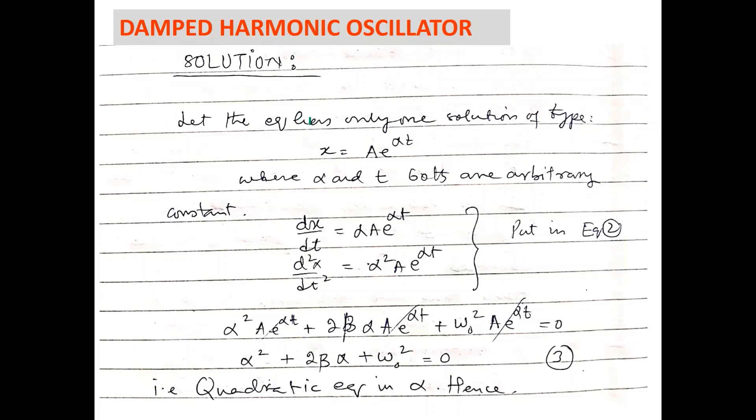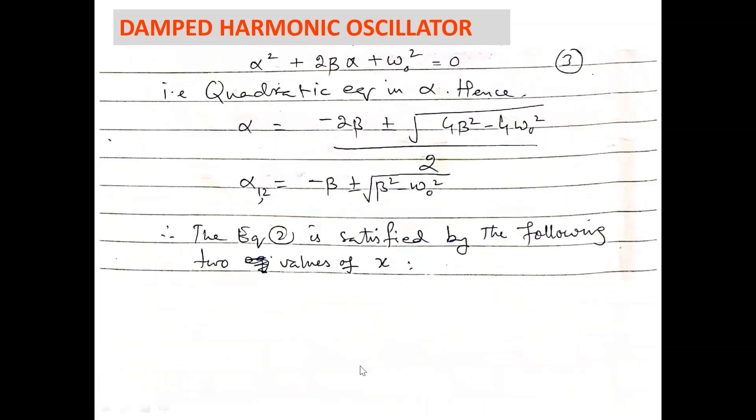Suppose the solution of the equation is x equals a e power alpha t, where alpha and a both are arbitrary constants. By taking the first order and second order derivative of this equation, we get these two equations. By putting these equations in equation 2, we get alpha square plus 2 beta alpha plus omega naught square equals 0. This is a quadratic equation in alpha. By solving this quadratic equation, we get two roots: alpha equals minus beta plus minus square root of beta square minus omega naught square. One root with positive sign and the second root with negative sign.